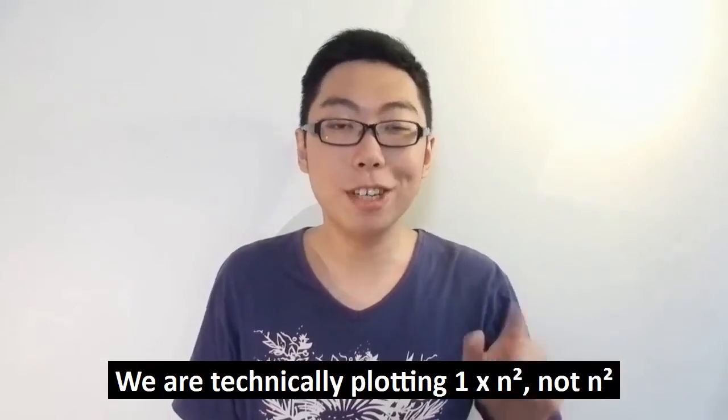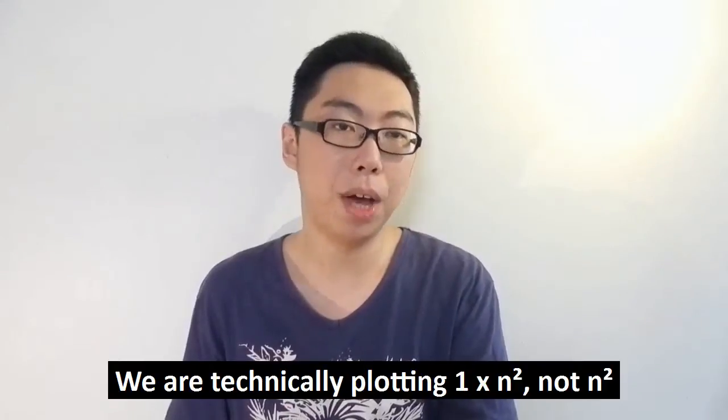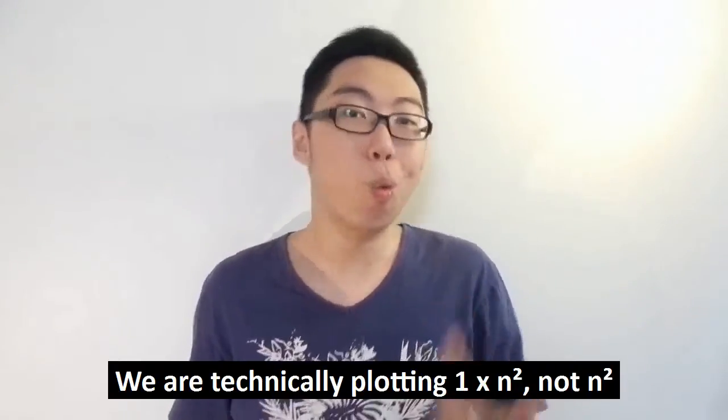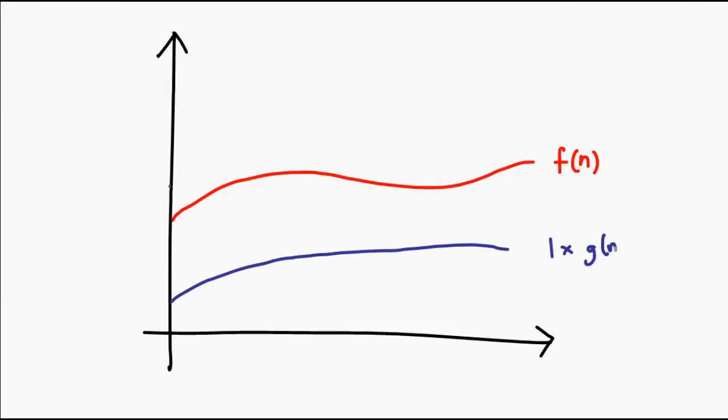Notice of course that we shouldn't be plotting g(n), we should be plotting c times g(n). Even though n square is technically just g(n), we can consider it 1 times g(n), in other words c equals 1. Everything happens to fit just nice in this particular case, but let's say you're trying this for a different algorithm, and you realize that g(n) actually dips below f(n) at certain points, don't despair just yet.